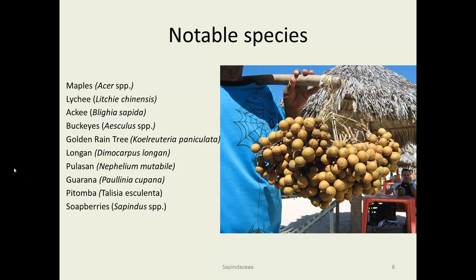The notable species include many different types of maples worldwide, and the same for buckeyes — quite a few different species, some native to the U.S. and some to Europe. There are fruits very popular in the tropics, like the lychee, ackee, longan, pulisan, guarana, and pitomba. The picture to the right shows a gentleman with a harvest of pitomba fruits. The soapberries and golden rain tree are also horticulturally interesting species.